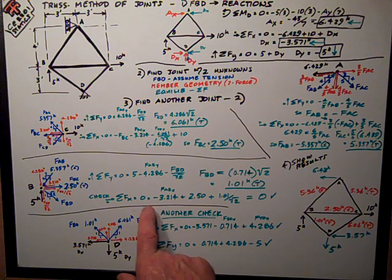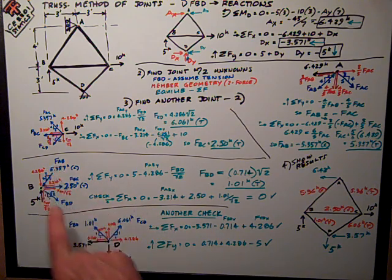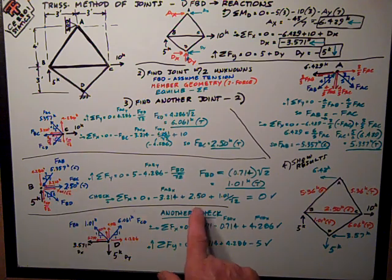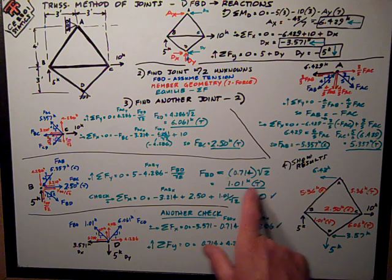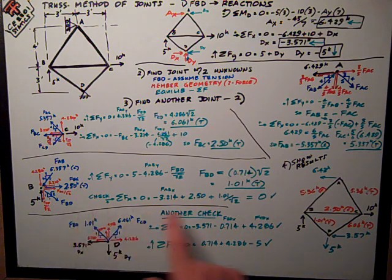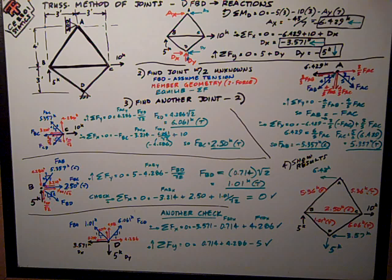In x, I've got negative 3.214 from FAB, 2.5 from FBC, positive, and positive, because I determined that it was tension, so it's in that direction. That checks out, those numbers add up to zero.